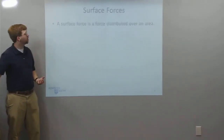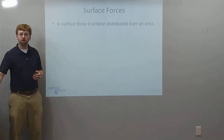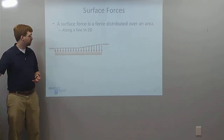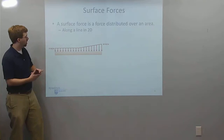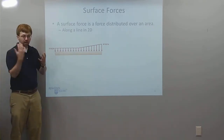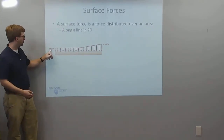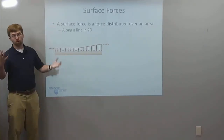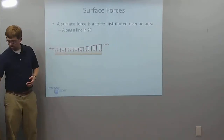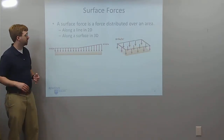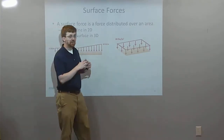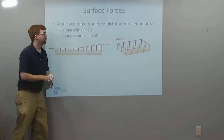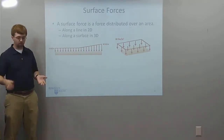Looking further at surface forces: a surface force is distributed over an area. In 2D, this is essentially a line — like this diagram of a beam labeled 5 kilonewtons per meter, meaning 5 kilonewtons for every 1 meter of the beam, perhaps representing the beam's weight. In 3D, it's distributed along a surface with two dimensions, X and Y. For every square inch of material, we might have 60 pounds of force — something like water pressure.